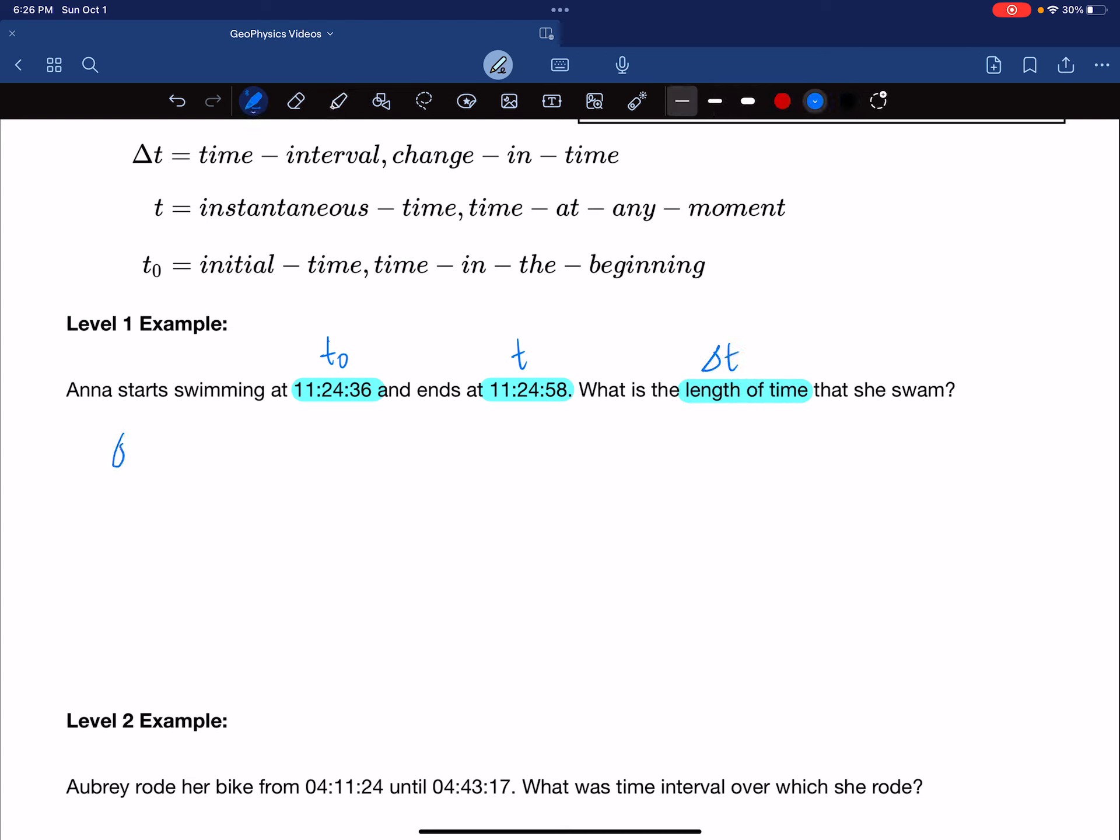So we have delta t equals t minus t₀. Now let me write that delta t a little more neatly. And a picture might be nice. We could put this on a number line or a timeline.